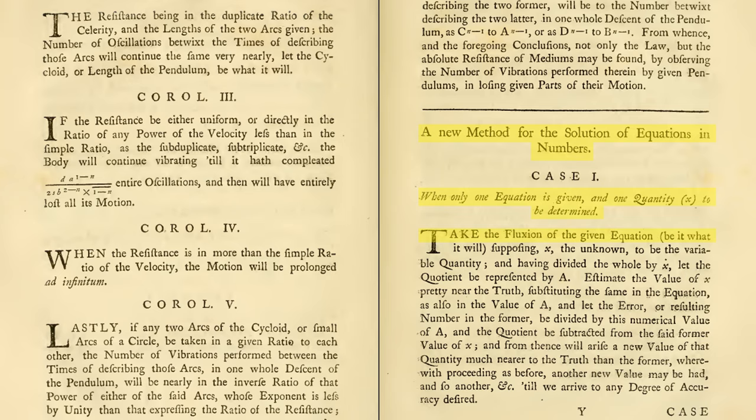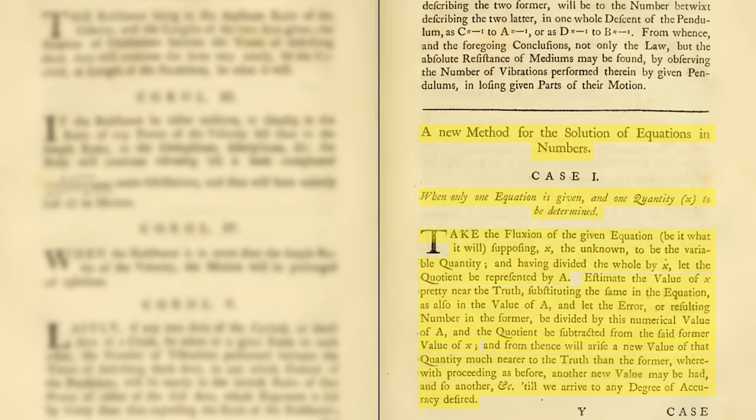Take the fluxion of the equation, be it what it will, supposing x, the unknown, to be the variable quantity, having divided the whole by x-dot, let the quotient be represented by A. Estimate the value of x pretty near the truth, substituting the same in the equation and also in the value of A, and let the error or resulting number in the former be divided by the numerical value of A and the quotient be subtracted from the said former value of x. And from thence will arise a new value of that quantity much nearer to the truth than the former, wherewith proceeding as before, another new value may be had, and so another, till we arrive to any degree of accuracy desired.